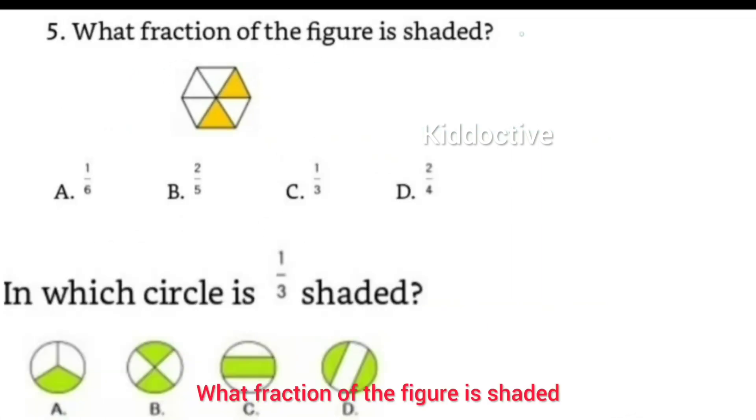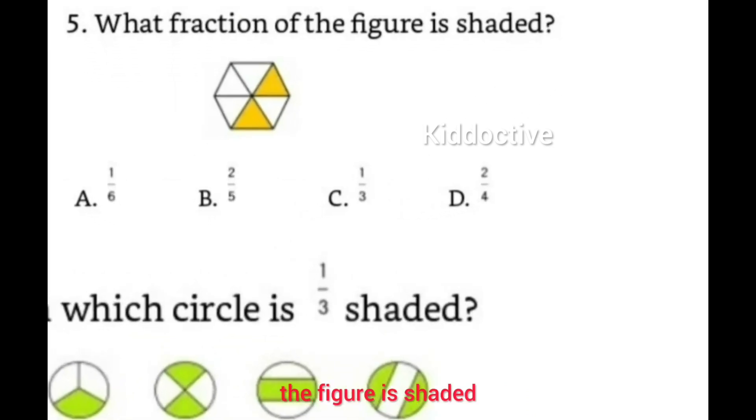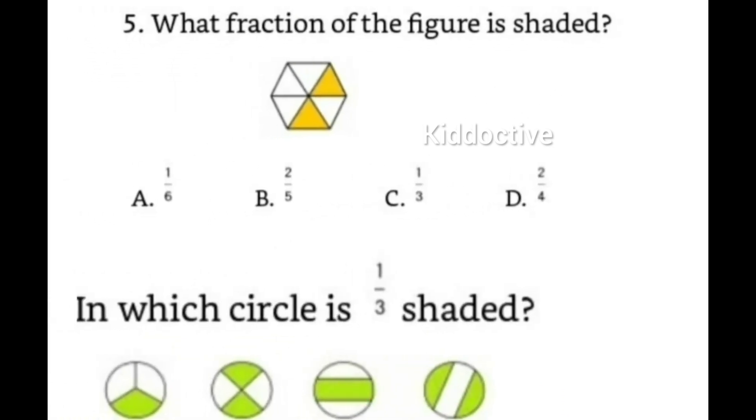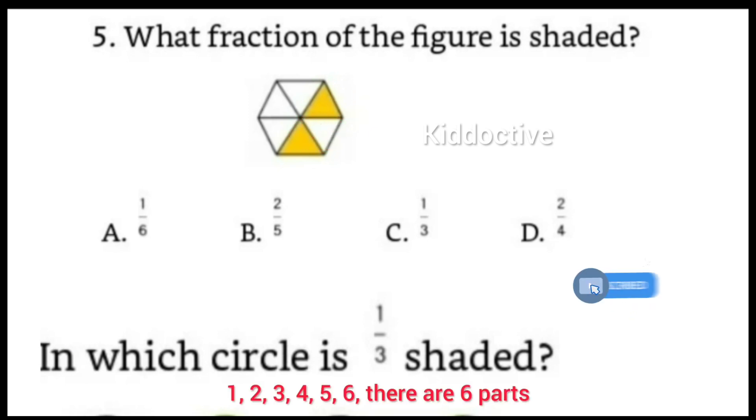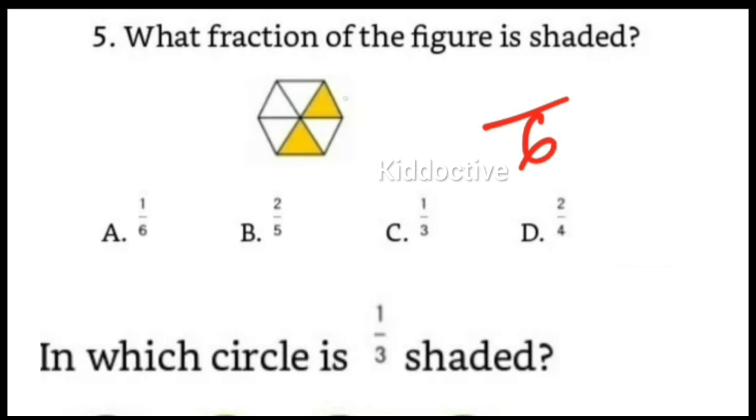What fraction of the figure is shaded? Let's see: one, two, three, four, five, six - there are six parts. How many parts are shaded? One and two. So 2/6. Two ones are two, two threes are six, so the answer is 1/3.